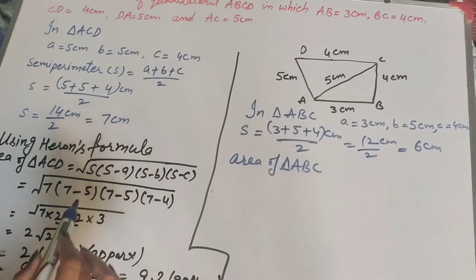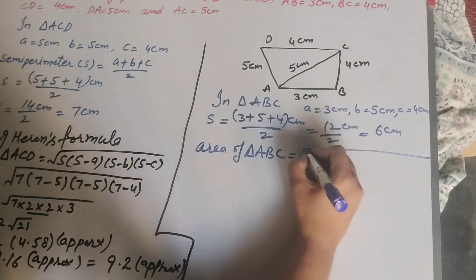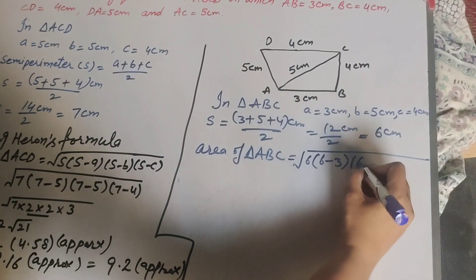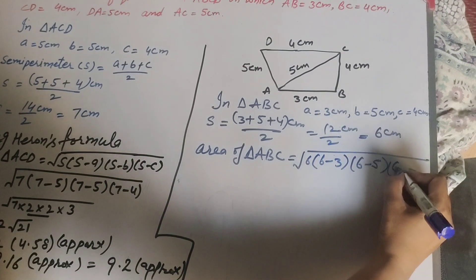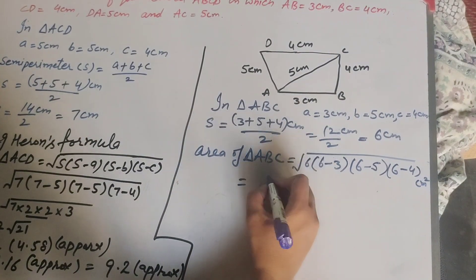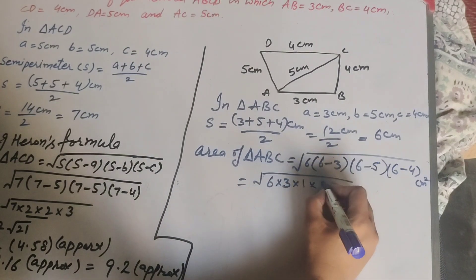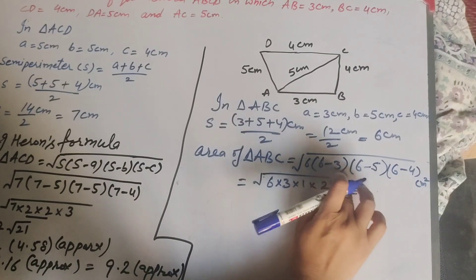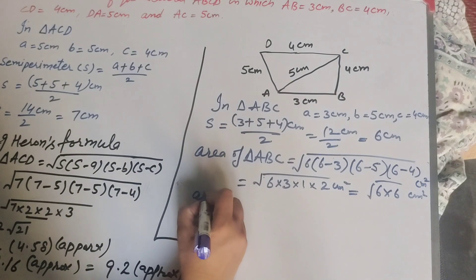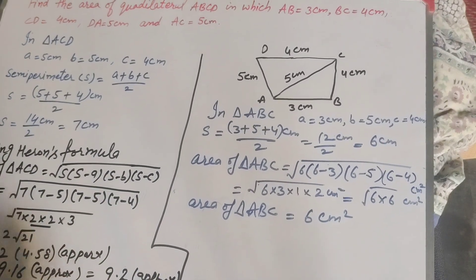Using Heron's formula for triangle ABC: Area = √(s × (s−a) × (s−b) × (s−c)) = √(6 × (6−3) × (6−5) × (6−4)) = √(6 × 3 × 1 × 2) = √36 = 6 cm².